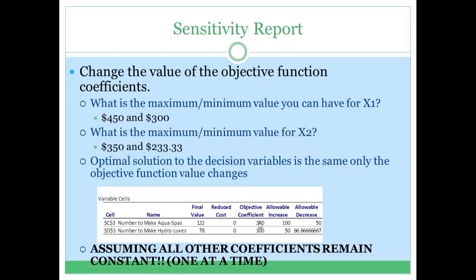From this table, we are seeing what ranges the objective coefficient can be in without changing our optimal solution, without changing the optimal values of x1 and x2.